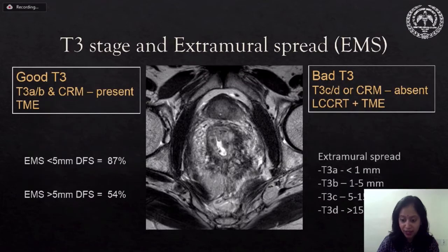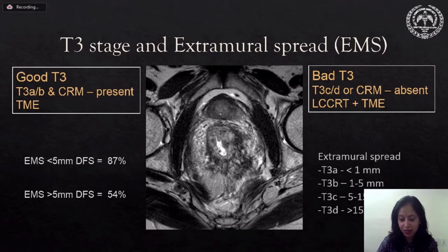In T3 stage there should be a clear tongue-like or nodular tumor growing into the mesorectal space. Depending on the degree of extramural spread, T3 tumors are classified as good and bad, because the degree of extramural spread has a close bearing on disease-free survival.